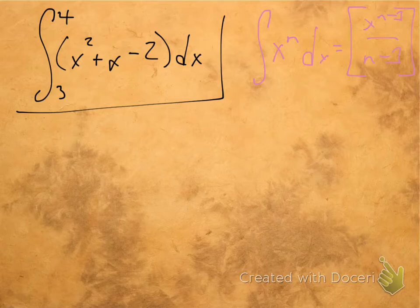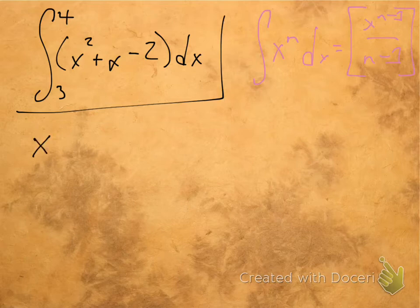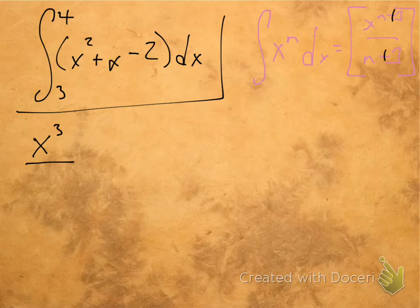x squared. The nth power here is 2. So when we're raising this to x to the n plus 1, we're just going to end up with x cubed, right? n plus 1. So we're going to get x cubed over 3.